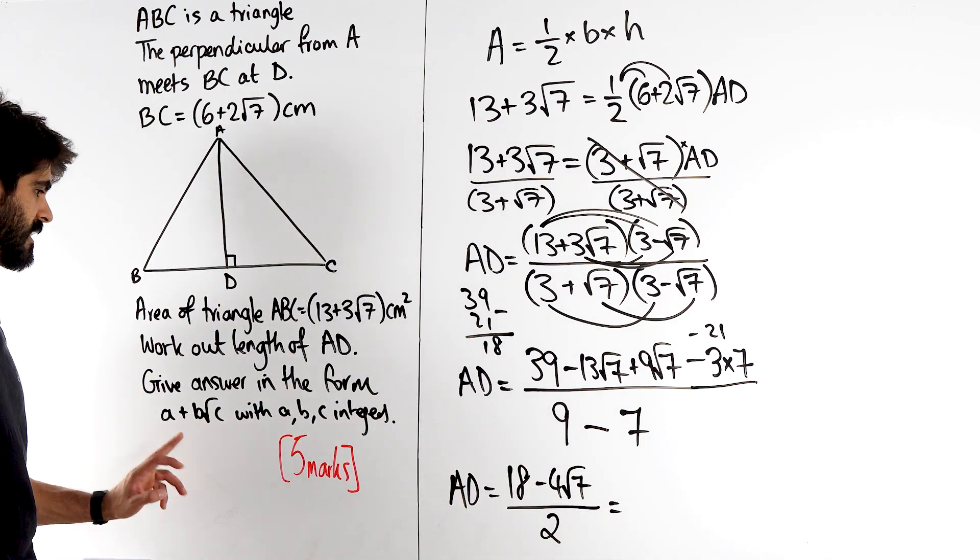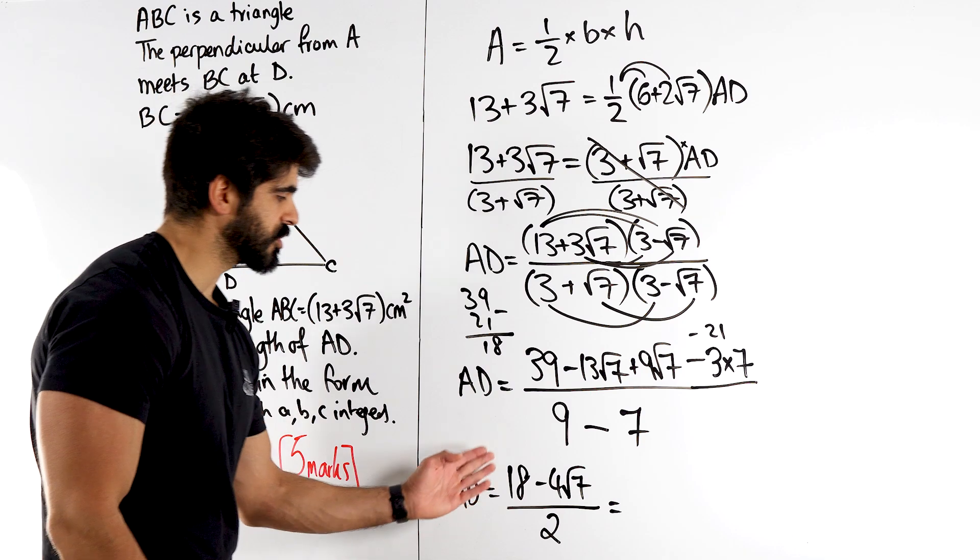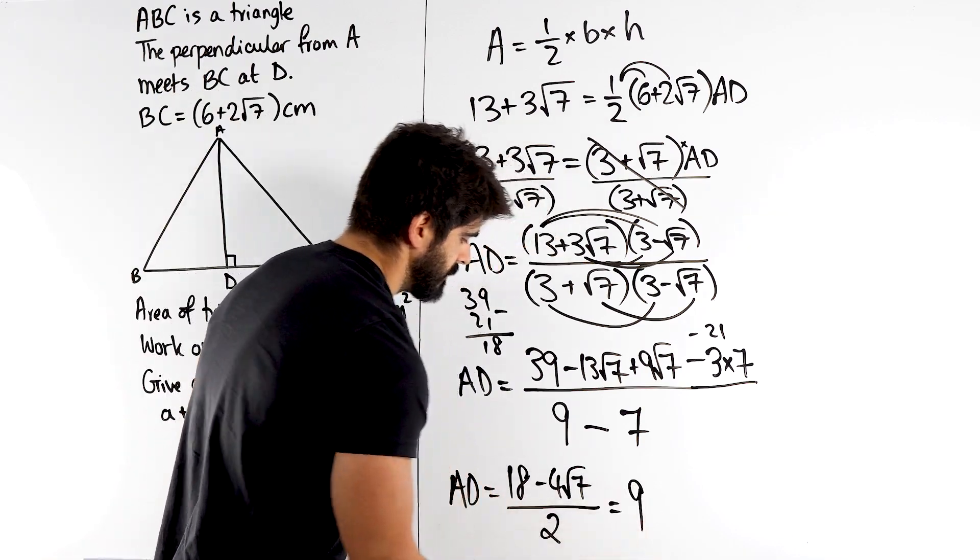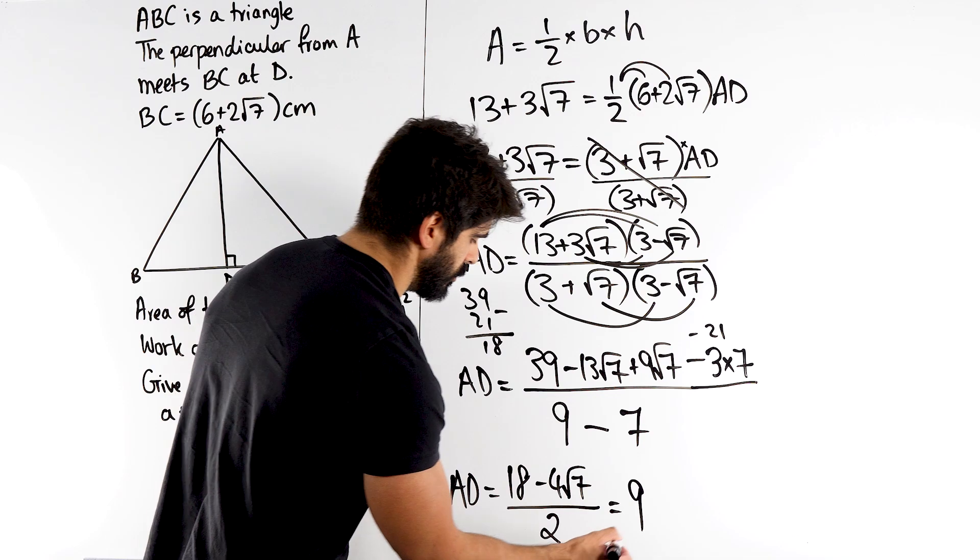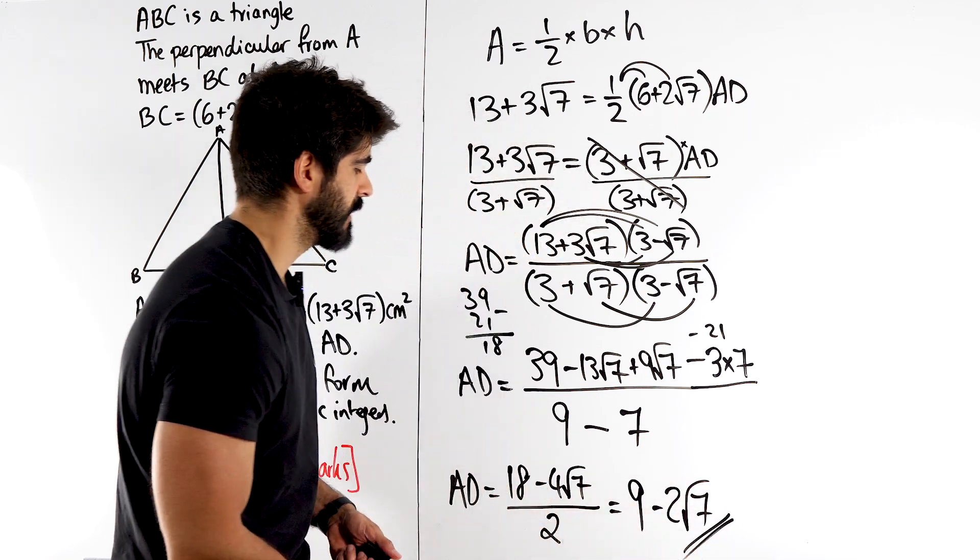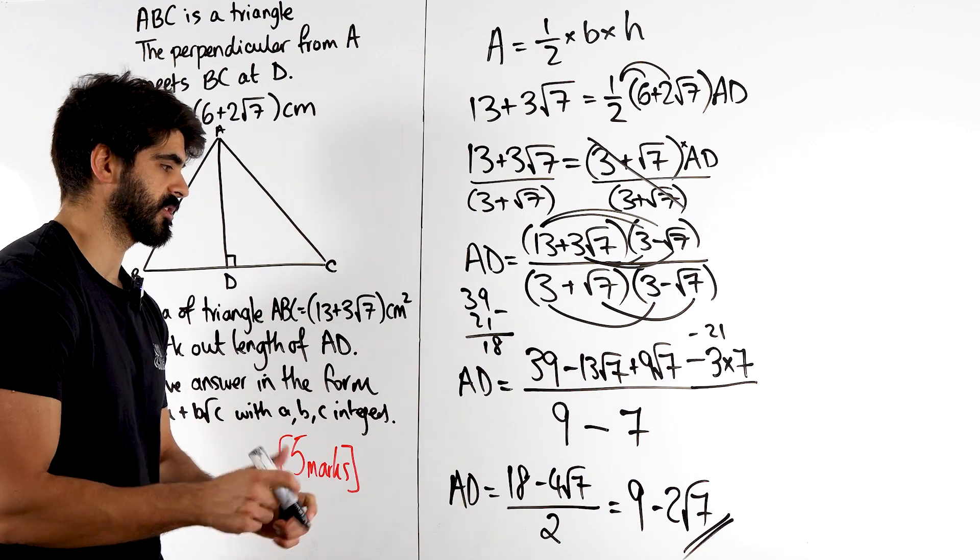But that's still not in the form that they want it in. We need integers. So we just split the fraction. We're going to do 18 divided by 2, 9. And then we have 4 divided by 2, 2. But don't forget it's a minus. And that is your final answer in centimeters, obviously.